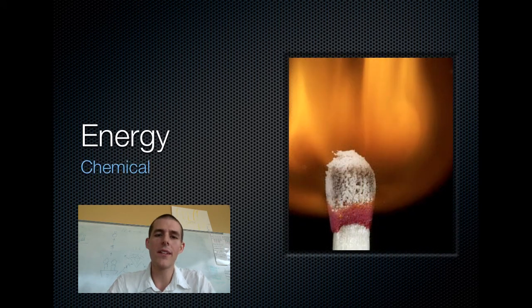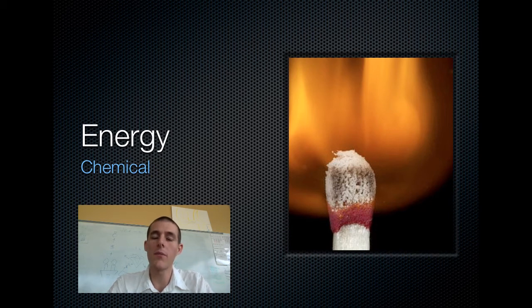And the last one that you need to know is chemical energy. This is energy that is stored in the instability of molecules. If a molecule is more unstable, it has more instability, it has got a lot of chemical energy. If a molecule is more stable, it has less chemical energy. As a molecule transitions from being less stable to more stable, it gives up its chemical energy. An example of that is the match right there. As that match burns, the molecules are moving from less stable to more stable, releasing energy in the form of light and heat.